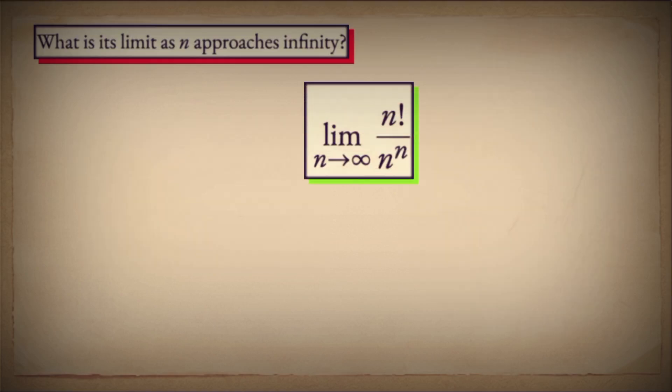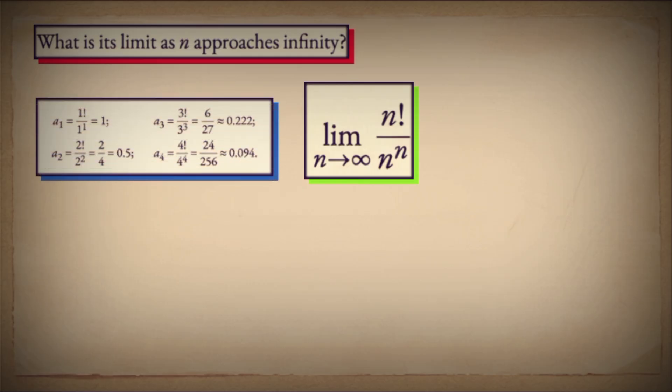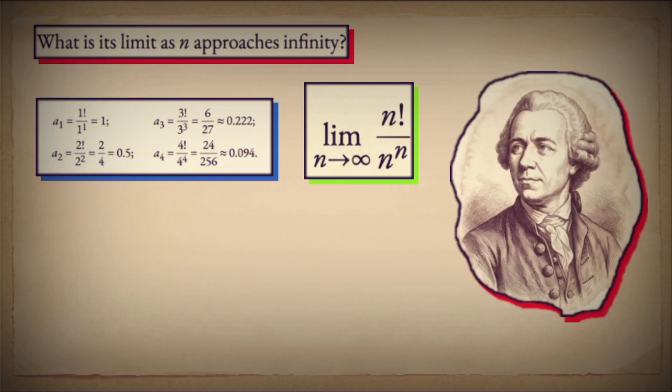Look at this limit: n factorial divided by n to the power of n. At first glance, what's your gut answer? Zero, right? The denominator seems to explode faster. It feels obvious. But obvious is a dangerous word in mathematics. And in the 18th century, Leonhard Euler saw this not as an end, but as a doorway.